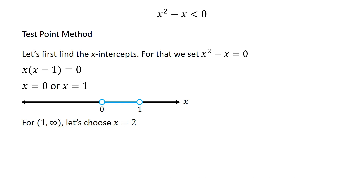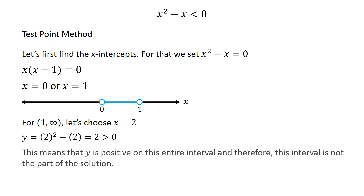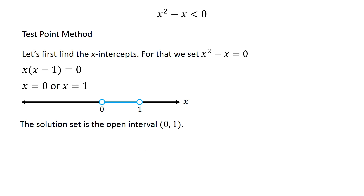For the interval 1 to infinity, let's choose x equal to 2. At this value of x, y evaluates to 2, which is greater than 0. This means that y is positive on this entire interval, and therefore this interval is not part of the solution. Thus the solution set is the open interval from 0 to 1.